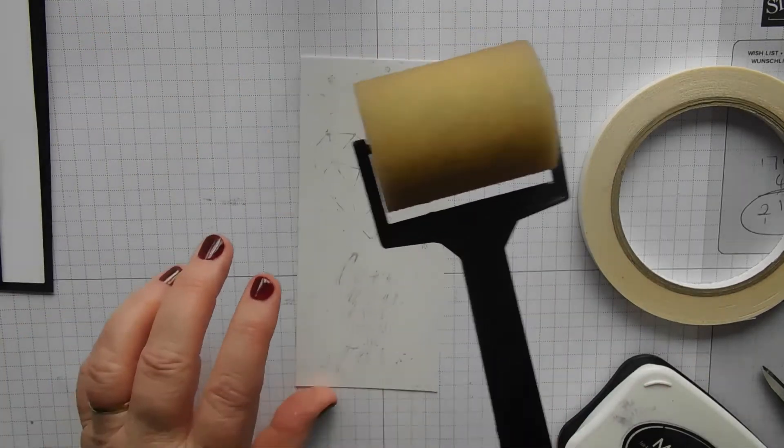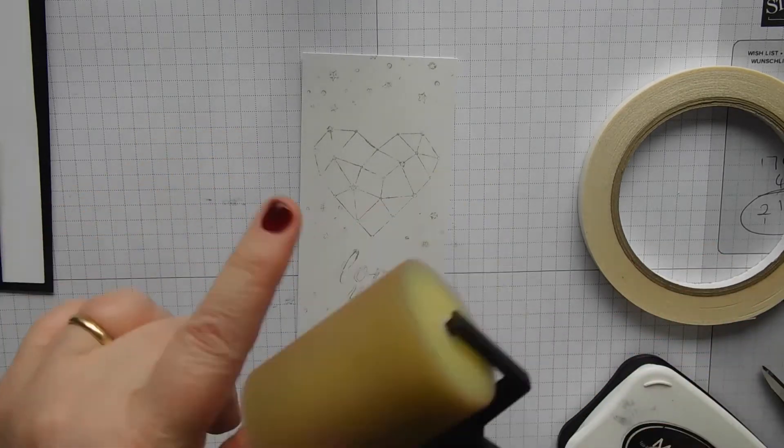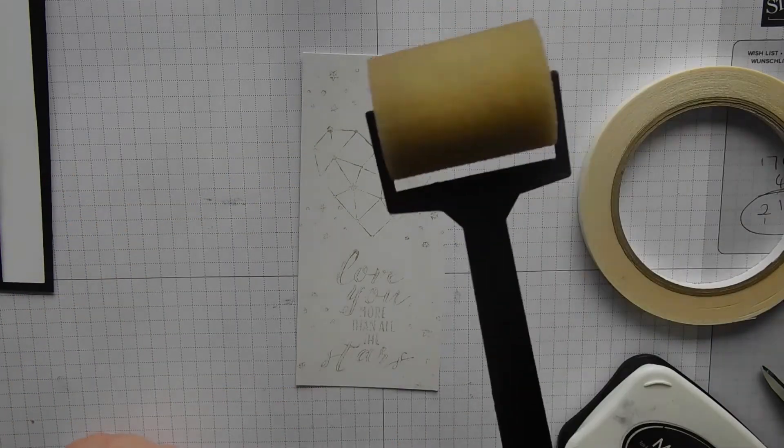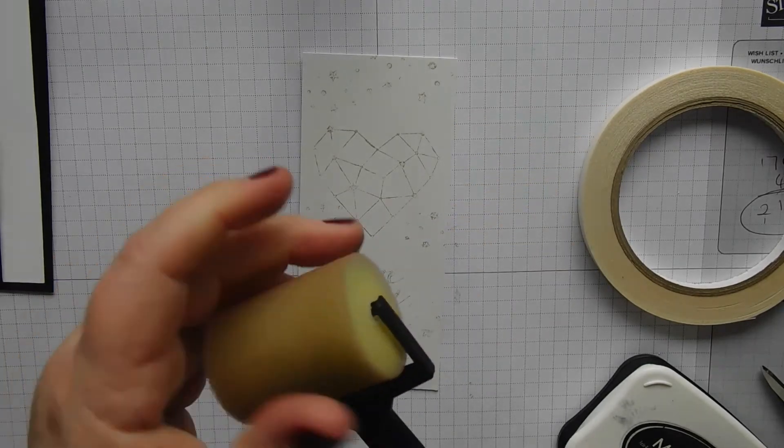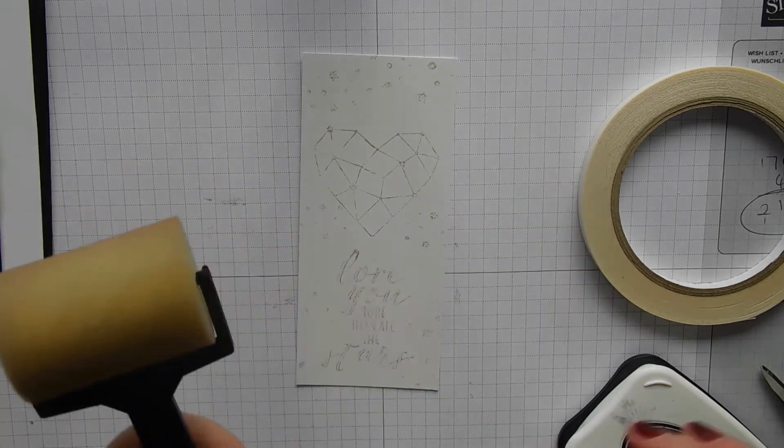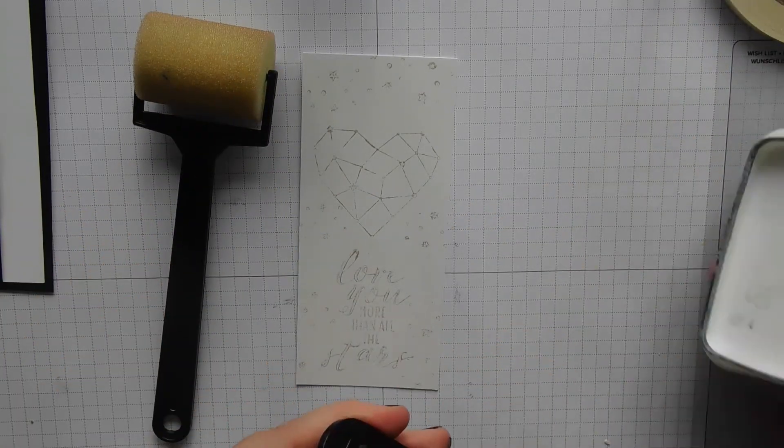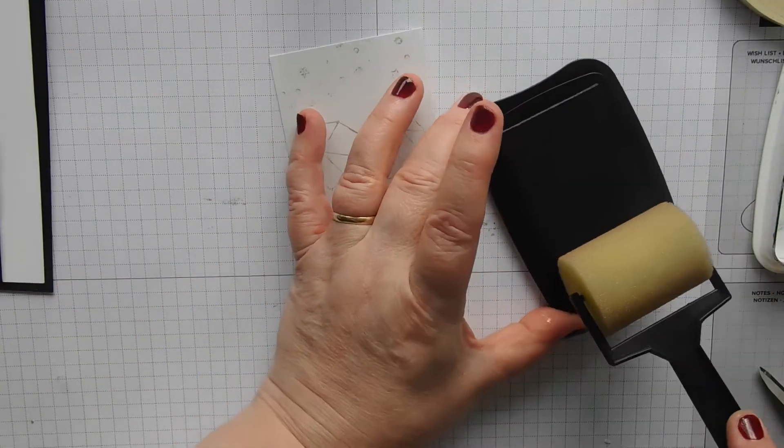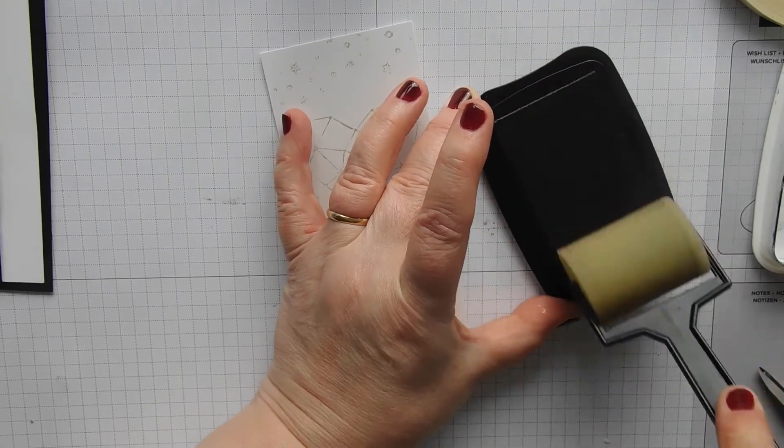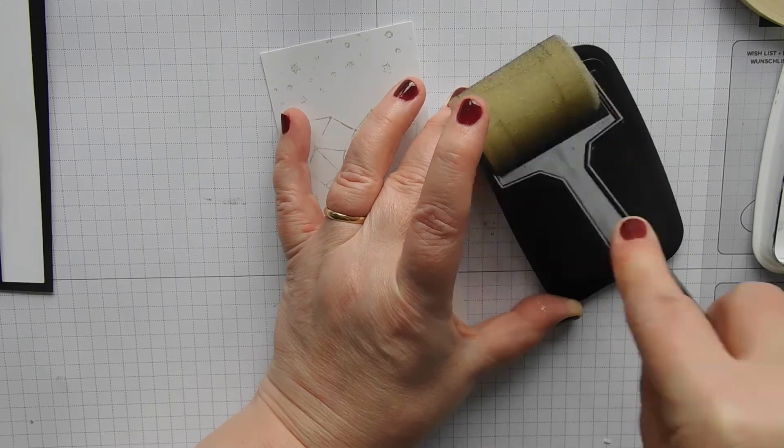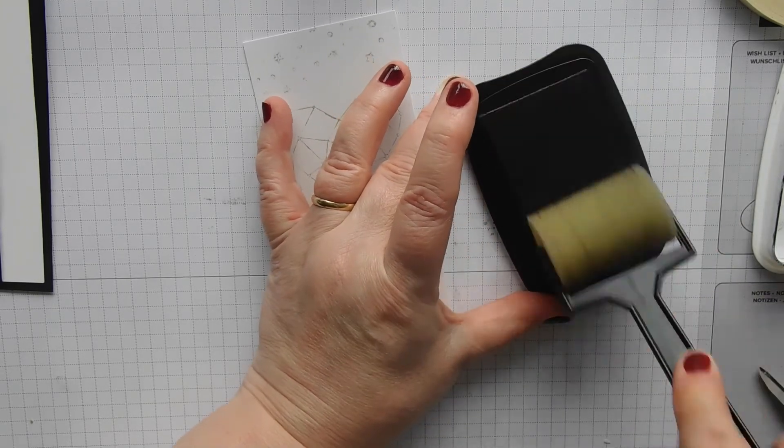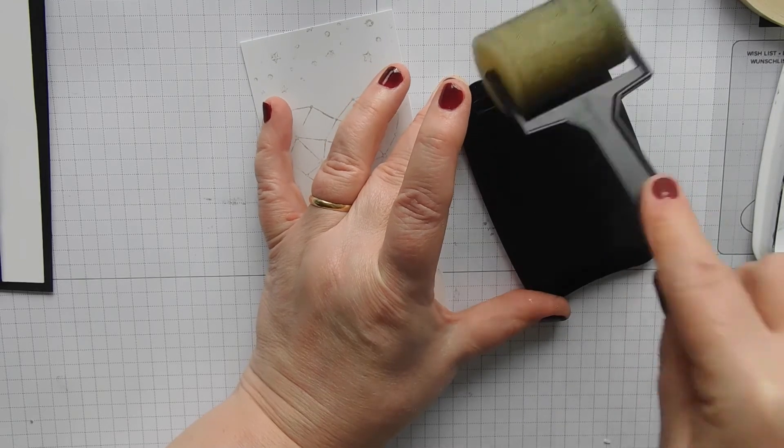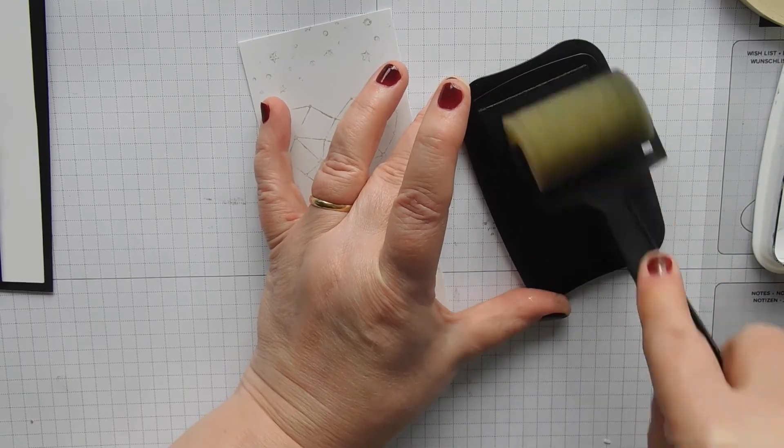I'm using a sponge brayer. These are from Stampin' Up as well. You get two of these and four sponges in a pack. And they just wash out and dry really well. You just run it under cold water and all the ink runs out. So, if you've not done any brayering before, you just need to pick up your ink. I've just re-inked it so I hope it's going to be okay. Just pick up the ink on the sponge, not doing that, doing that and picking it up so that it fills the whole sponge.